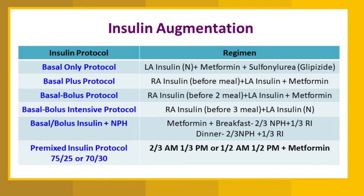From personal experience, the most commonly seen regimen is the pre-mixed insulin protocol. Pre-mixed insulins like 75/25 or isophane (NPH) 70% with regular insulin 30% are available. The dose is given twice daily: two-thirds of the dose in the morning and one-third at night, or alternatively half in the morning and half at night, with metformin.